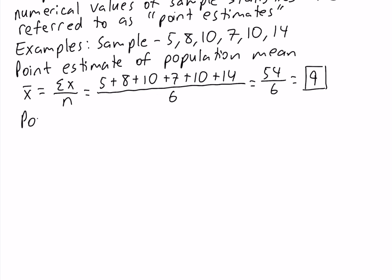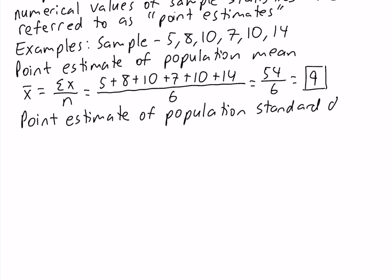Now let's calculate the point estimate of the population standard deviation. The point estimate of the population standard deviation is provided by the sample standard deviation, which has the formula: the square root of the variance, which is the sum of (x minus x-bar) squared over n minus 1.